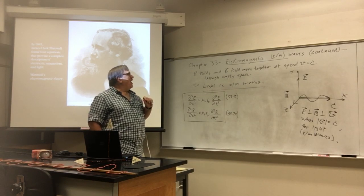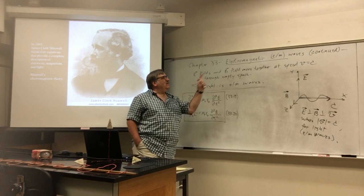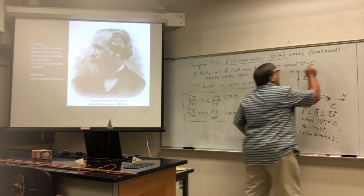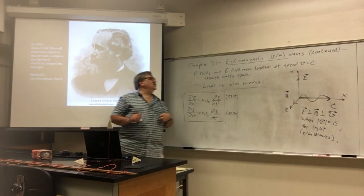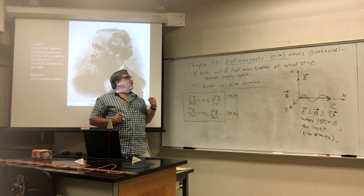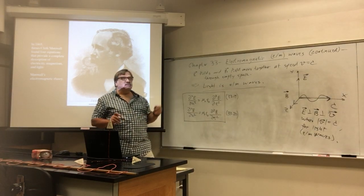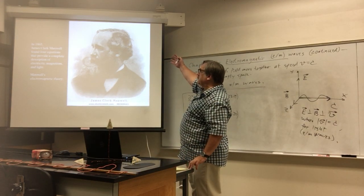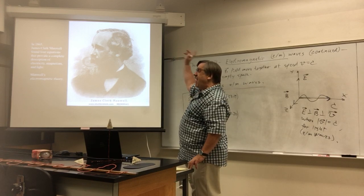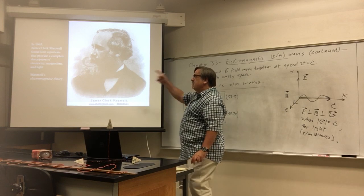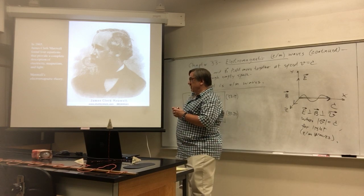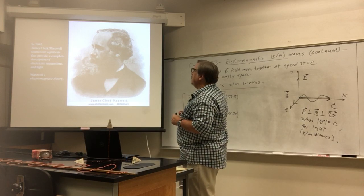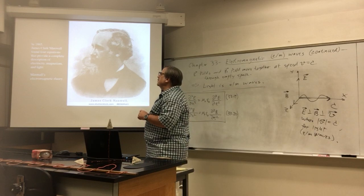I showed you last class that electric fields and magnetic fields move together at speed equal to the speed of light through empty space. Maxwell realized this — James Clerk Maxwell — who I have shown here, found four equations that provide a complete description of electricity and magnetism, and what I am showing right now links light in with it. So Maxwell's equations provide a complete description of electricity, magnetism, and light, collectively referred to as Maxwell's Electromagnetic Theory.